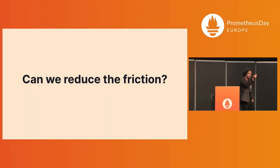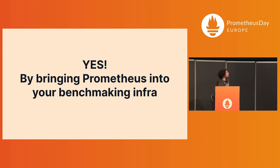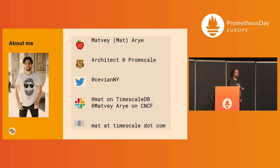So the question is, can we reduce this friction instead of having to run benchmarks, then download everything locally, and then run benchmarks again — can we do something smarter? The answer is yes, and the way you do this is you integrate Prometheus into your benchmarking setup. I work on a system called PromScale — it's a remote write system for Prometheus, so it's where you can store your Prometheus data. And we benchmark this system using the techniques I will tell you about now.